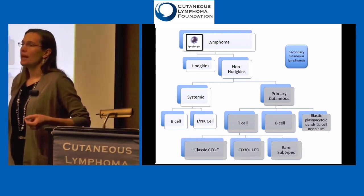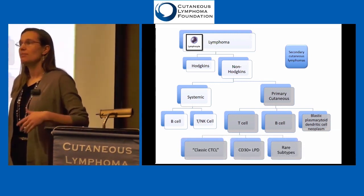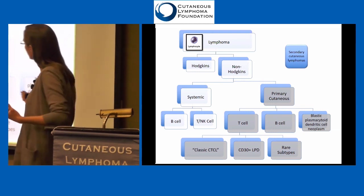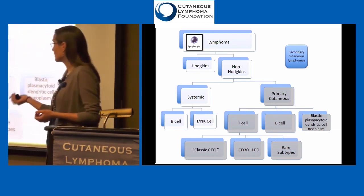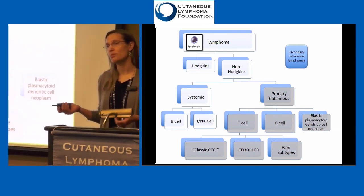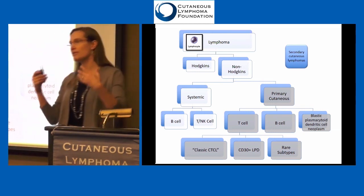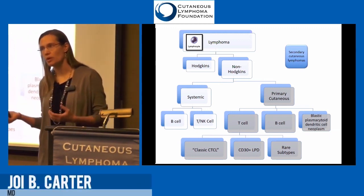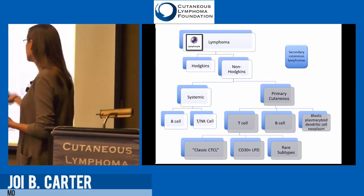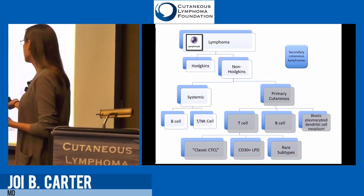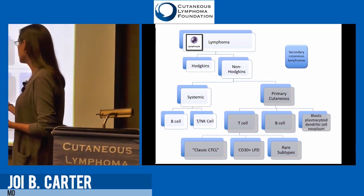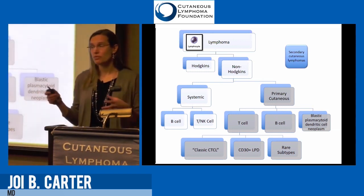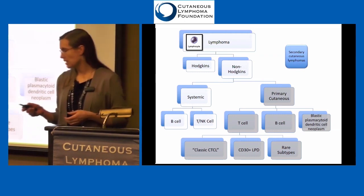The T cell lymphomas I like to put into three main buckets. The classic CTCL — when people say 'I have CTCL,' they usually mean they have mycosis fungoides, which is one of the subtypes. Then the CD30 positive lymphoproliferative disorders, and the rare subtypes, which are so rare we're not going to talk a lot about those today.